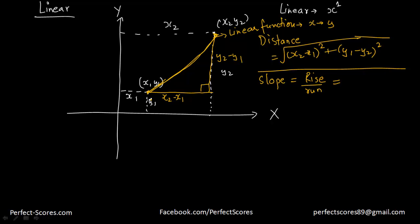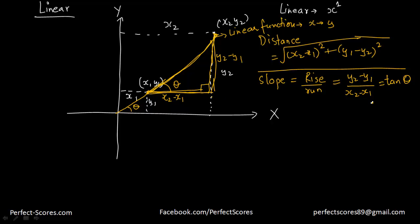The slope of the linear function is equal to the rise of the line divided by the run of the line. It tells you: if the line runs a certain distance, by how much does it rise? The rise is y2 minus y1 and the run is x2 minus x1. If this angle is theta, then y2 minus y1 over x2 minus x1 is tangent theta, because this is the perpendicular and this is the base. So slope is also equal to the tangent of the angle the line makes with the x-axis.